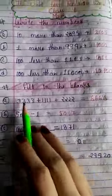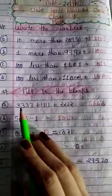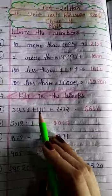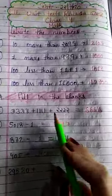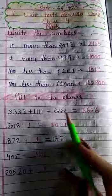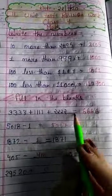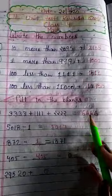इस तरह हमें fill in the blanks देखेंगे। इसमें देखेंगे हम 3,333 plus 1,111 plus 2,222. अब हमने तीनों को plus किये तो हमारा क्या आएगा? 6,666.